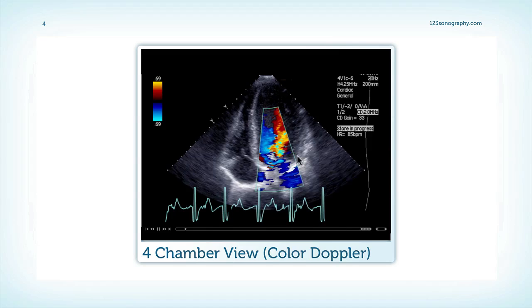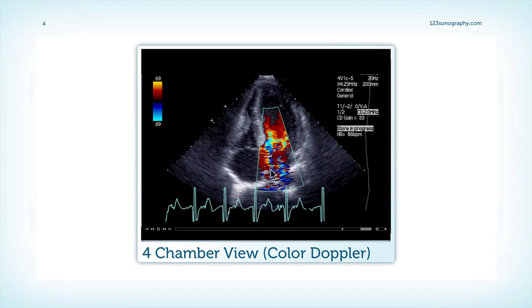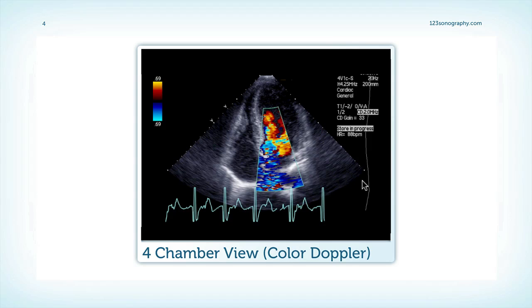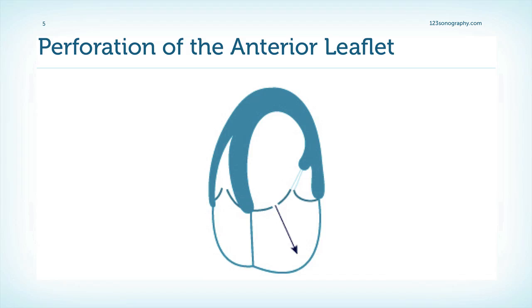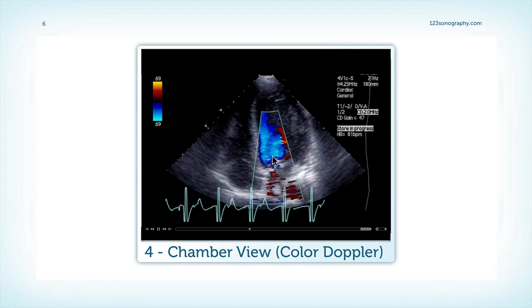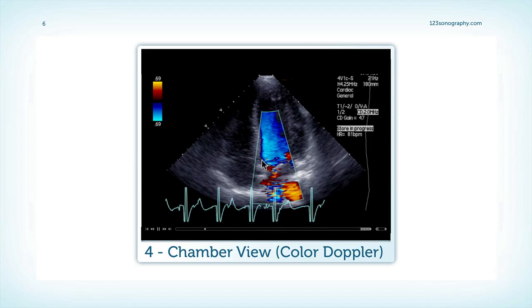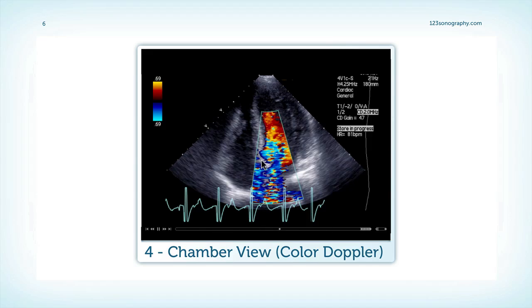Using color Doppler, you can see that there is a jet which passes directly through the anterior leaflet. This is the typical feature that you will find in perforation of the anterior leaflet — a jet that passes through the valve. Again, a fairly broad jet which passes through the anterior leaflet fairly close to the septum.